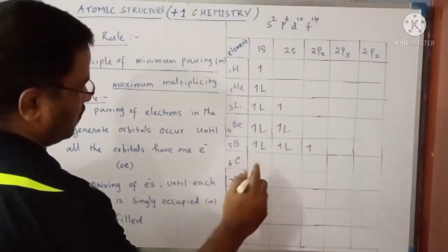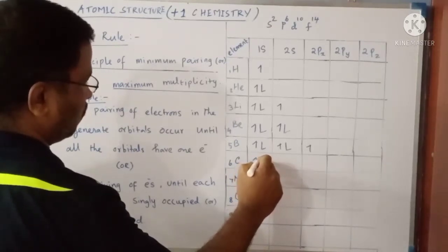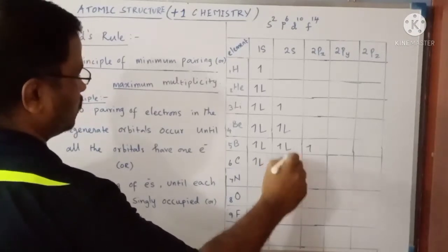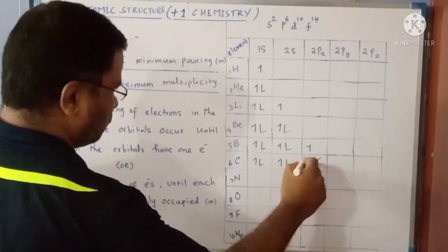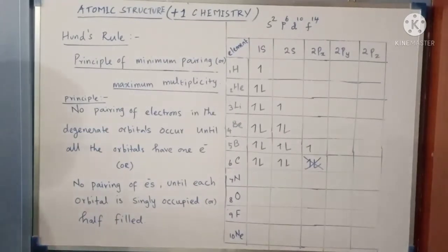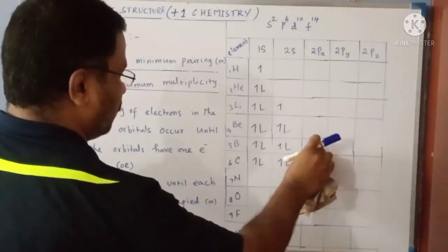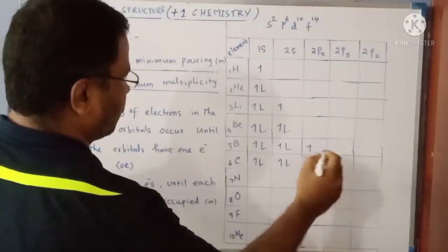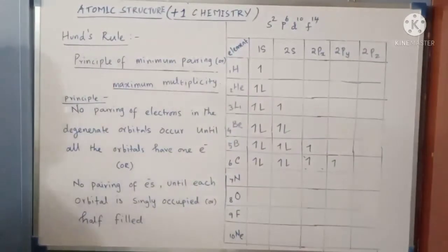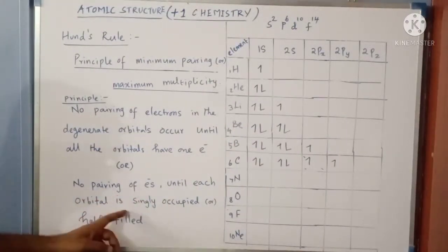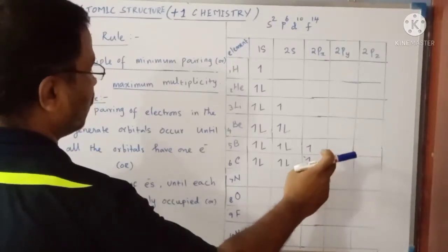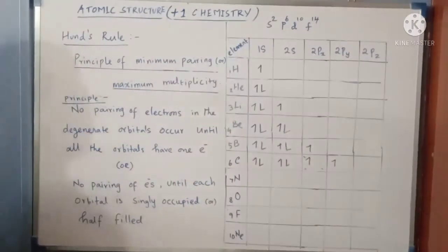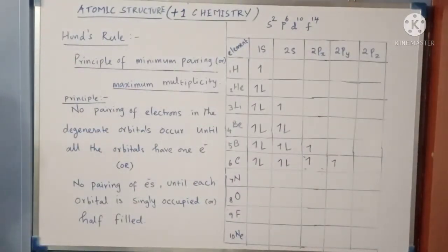For carbon with atomic number 6, there are 6 electrons. After filling 2 in 1s and 2 in 2s, 2 more electrons remain. You cannot fill both the fifth and sixth electrons into the 2Px orbital — that is what Hund's Rule says. When the fifth electron is added to 2Px, the sixth electron goes to 2Py. No pairing until each orbital is singly occupied — you cannot start pairing without having electrons in the 2Py and 2Pz orbitals. If there were a seventh electron, it would go to the 2Pz orbital.